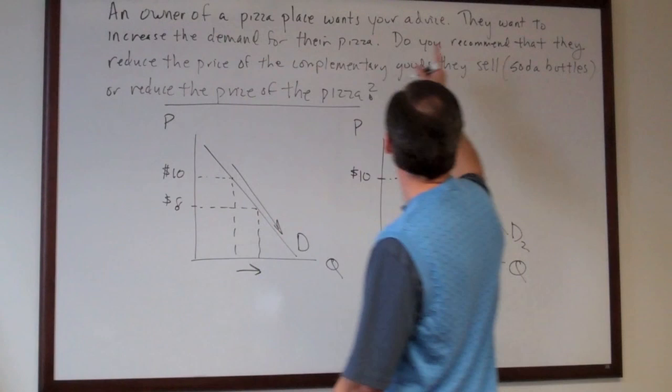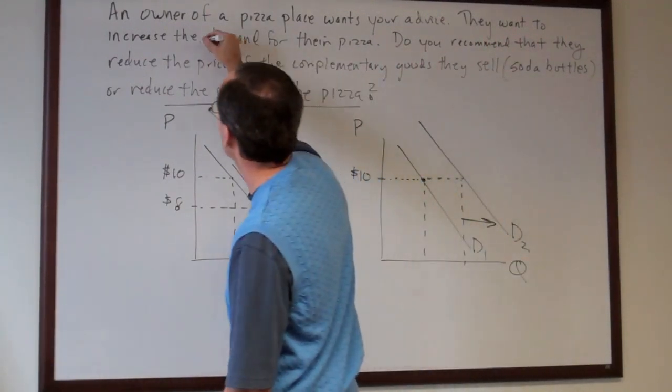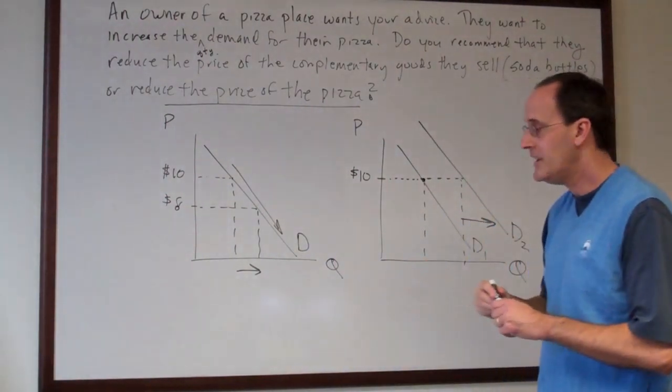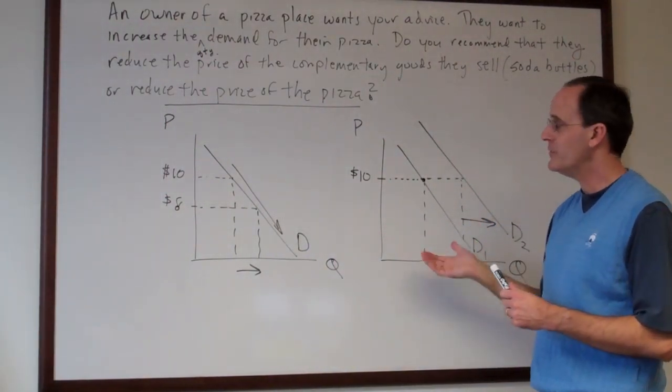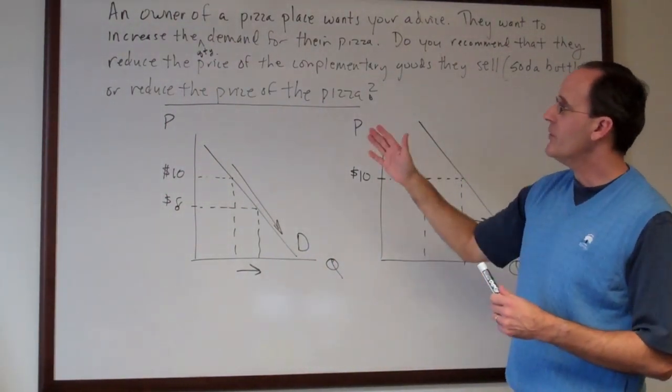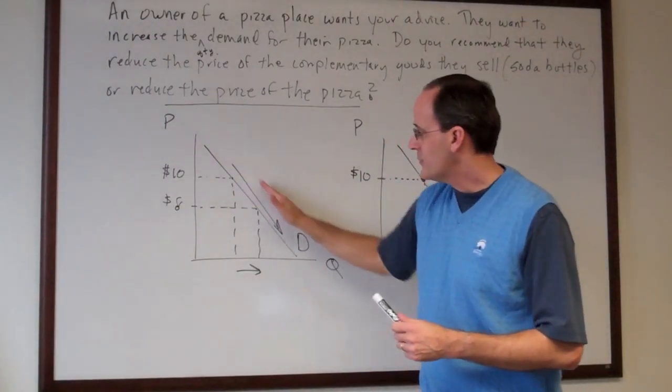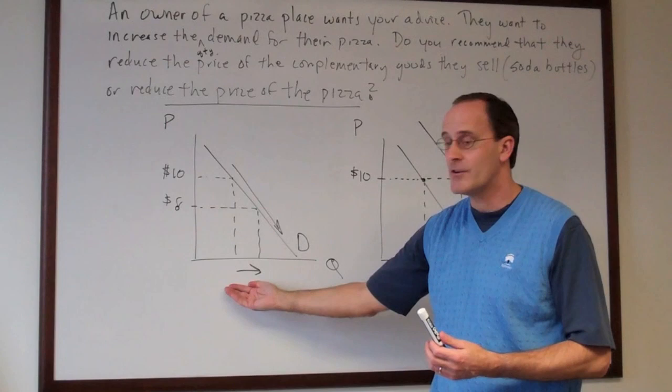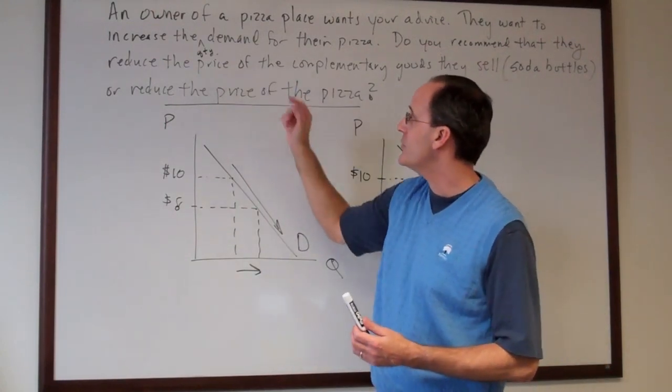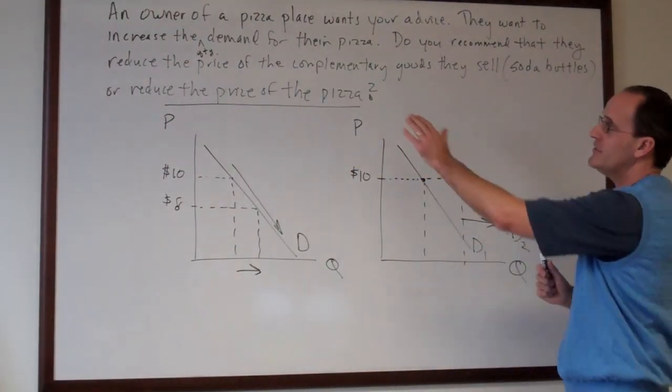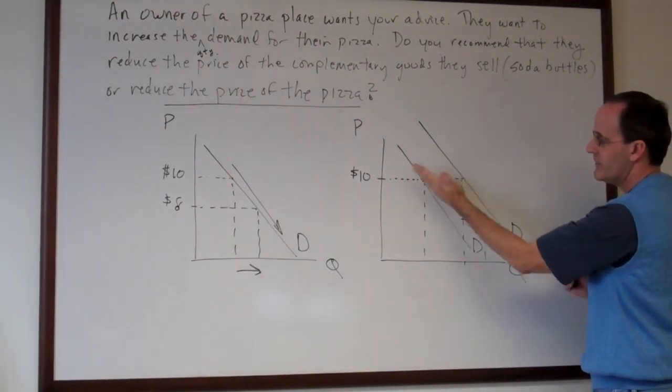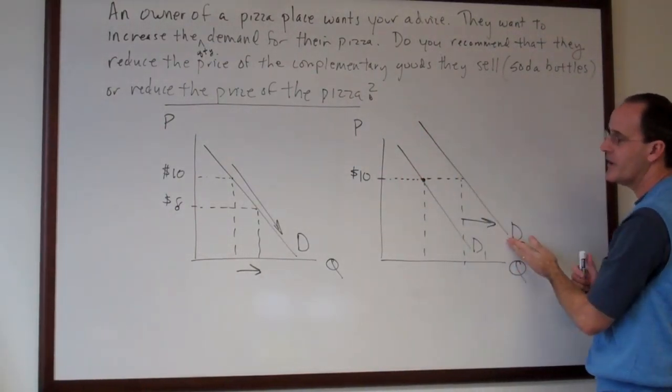So if we had changed the question and we had asked they want to increase the quantity demanded, well then the entire analysis would have been reversed. We would have known that the only right answer would have been what's here in the first graph because that's the change in the quantity demanded because of the change in the price of the good. And the price of the complementary good would have actually caused a shift or change in the entire location of the demand curve.